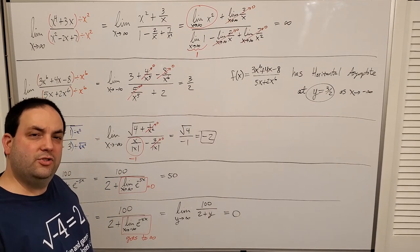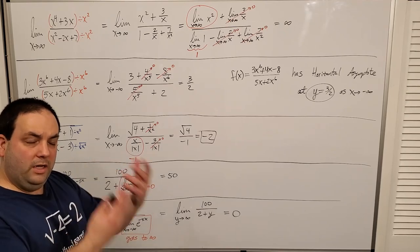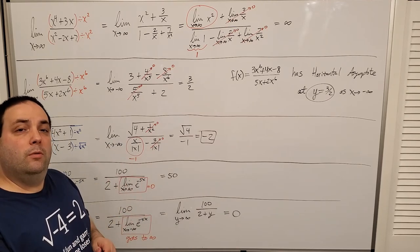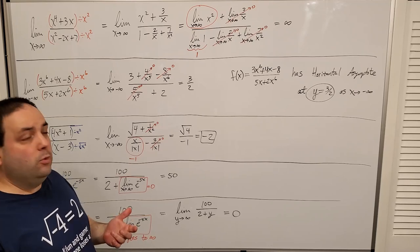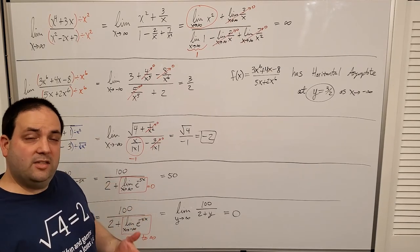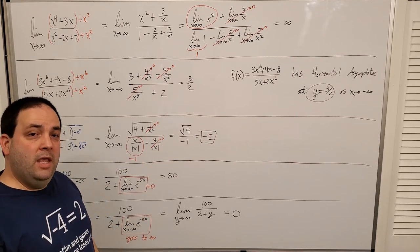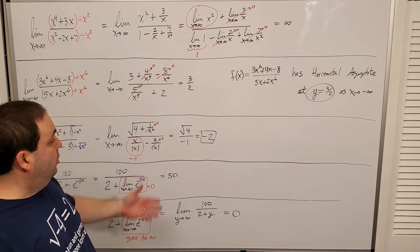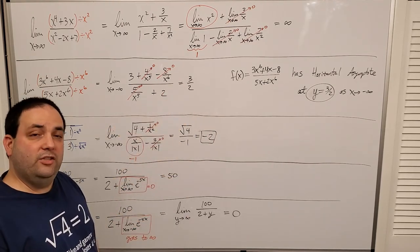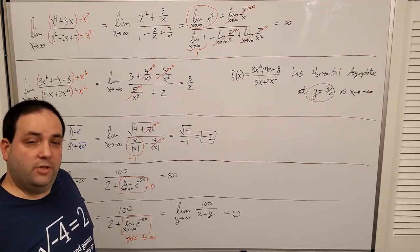I hope this has helped you understand in more detail the language we use to talk about limits as x goes either unbounded to the left or the right, and also how to turn that into the language of horizontal asymptotes.